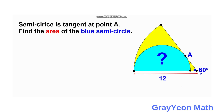The first thing to notice is that the semicircle is tangent to the side of the sector. So we can draw a line from point A to the center of the semicircle. Since it is tangent, this angle is 90 degrees. Combined with the 60-degree sector angle, this means the remaining angle is 30 degrees, and we form a 30-60-90 triangle.